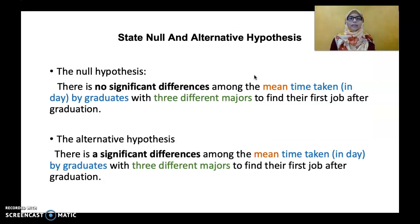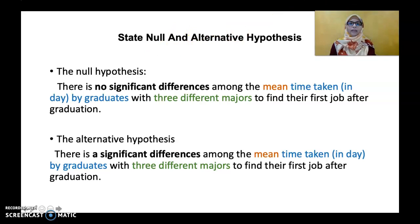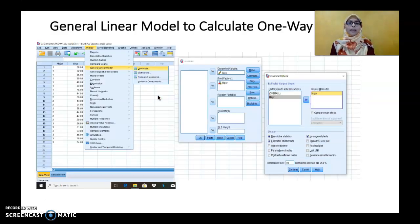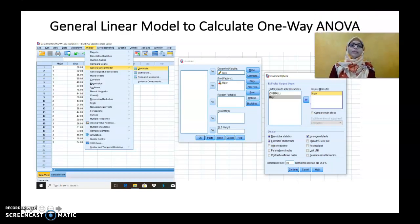Our first task is to write the null and alternative hypothesis. There are two ways: using symbols and using sentences. I choose to write the hypothesis using sentences. For the null hypothesis: there is no significant difference among the mean time taken in days by graduates with three different majors to find their first job after graduation. The alternative hypothesis states: there is a significant difference among the mean time taken in days by graduates with three different majors to find their first job after graduation.